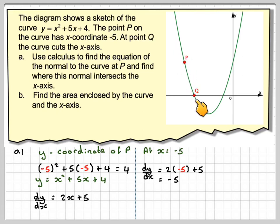But that's the gradient of the tangent, which I call MT. But I want to find the gradient of the normal. I know that the product of the gradient of the tangent times the gradient of the normal is minus 1.